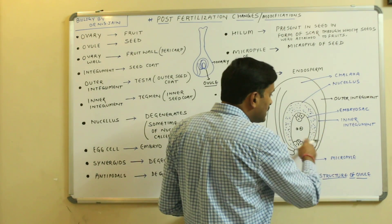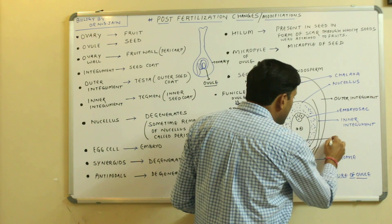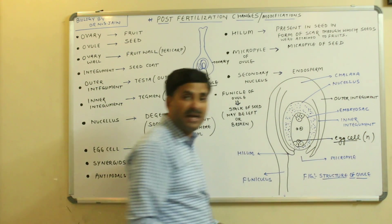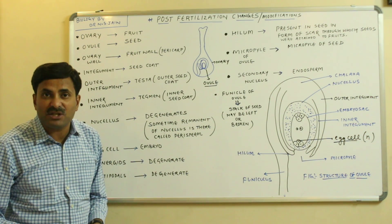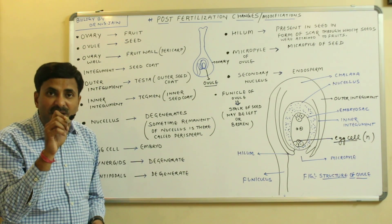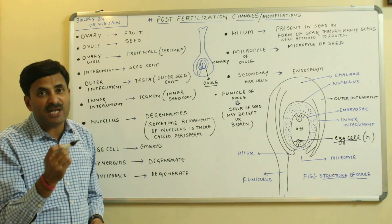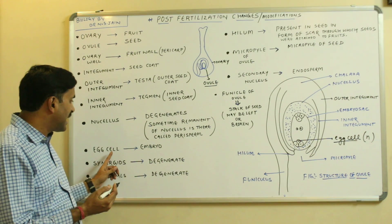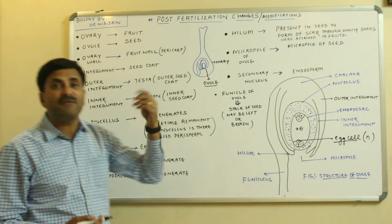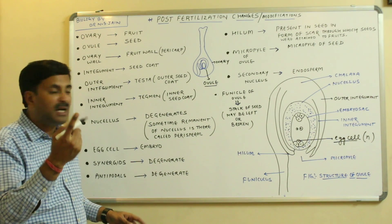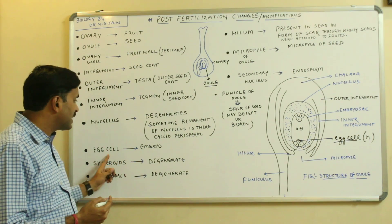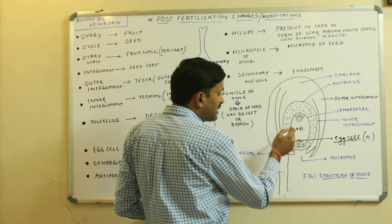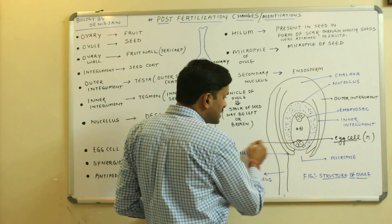Inside the ovule, the embryo sac is present, and in the embryo sac the egg cell is found. The egg cell is haploid (n). After fertilization, the egg cell fuses with the male gamete to form the zygote, and the zygote converts into the embryo. So the egg cell ultimately forms the embryo after fertilization.